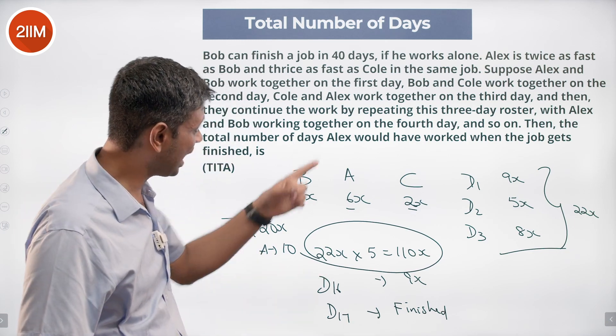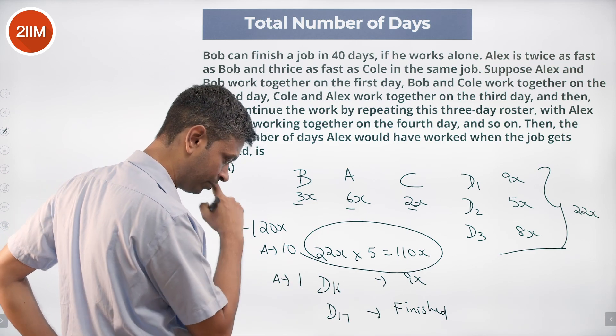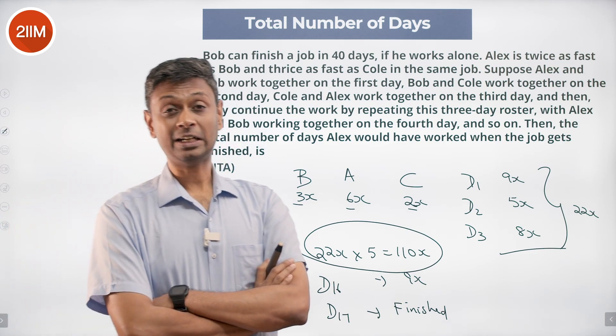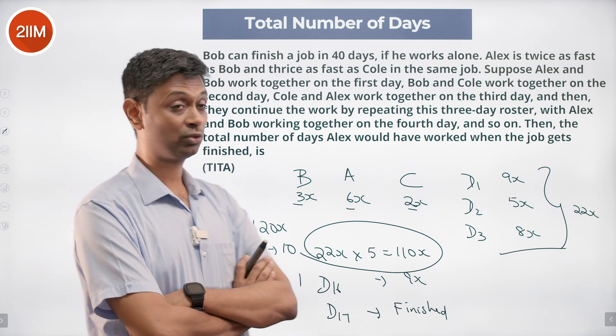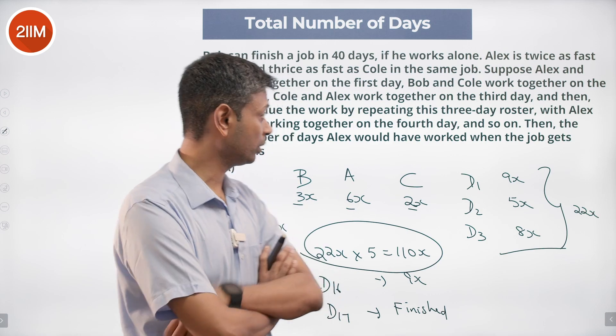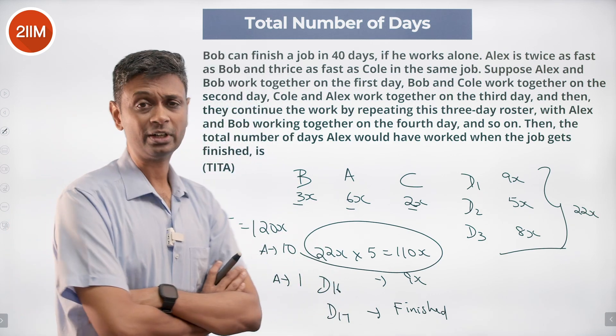And then day 16, Alex and Bob work. So again Alex gets one more day. Day 17 is Bob and Cole. That would have been a tricky day, do you count it or not count it because it's half a day, not a full day. Luckily for us, we don't have to deal with it. Then the number of days Alex would have worked when the job gets finished is 10 plus 1, 11 days.